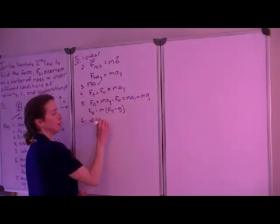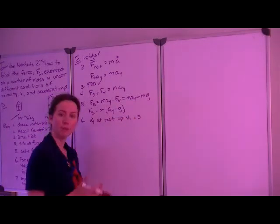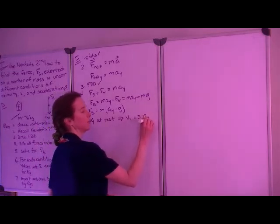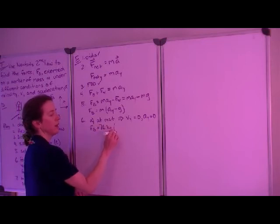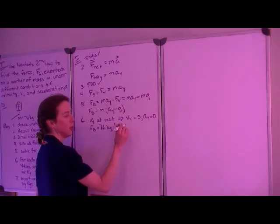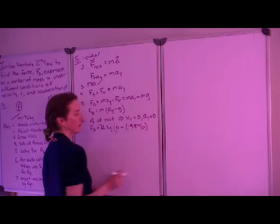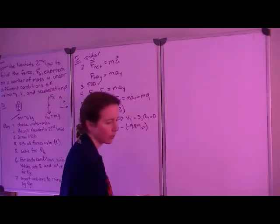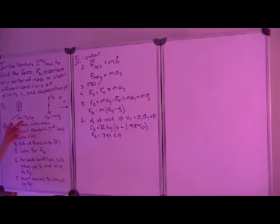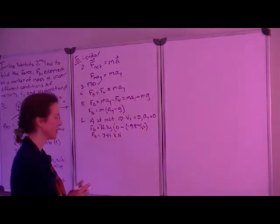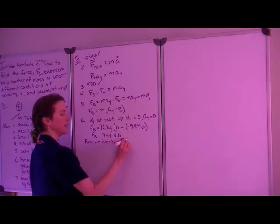In condition A, the bucket is at rest. What does 'at rest' mean? It means it's not moving, so the velocity in the Y direction is zero, and moreover the acceleration in the Y direction is zero. Substituting into our equation: mass of the worker is 76 kilograms, A_y is zero, and gravitational acceleration is acting downward so it carries a negative sign. If we calculate this force, we come up with 744.8 Newtons. We're only given one value — 76 kilograms — which has two significant digits. So we report that the force on the worker is 740 Newtons.